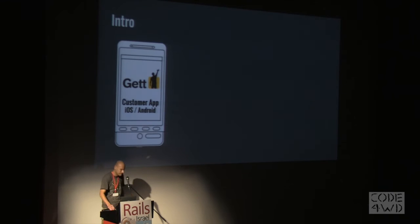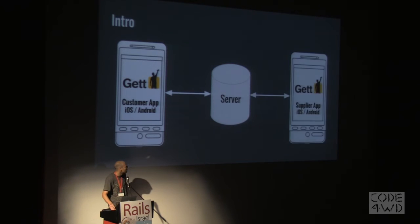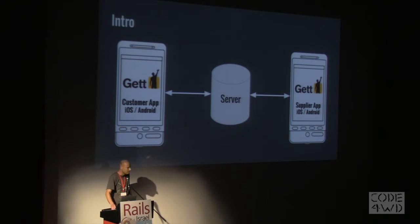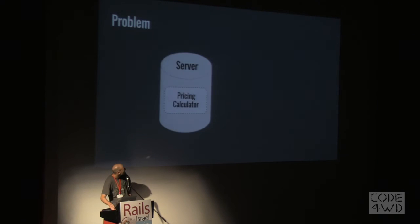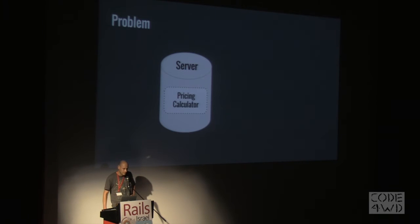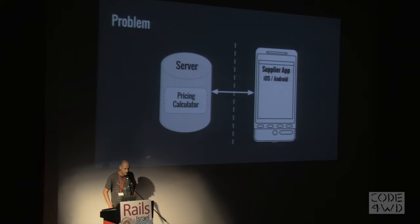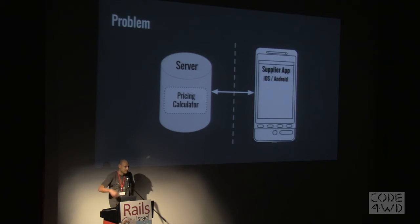Generally, the customer has an app installed, clicks to order something — let's say a taxi ride to keep things simple. This goes to the server, the server finds a supplier who accepts the order, the supplier delivers, and all is well. How do we determine the price? There's a pricing calculator library for that. The application normally pulls or gets pushed pricing data. However, sometimes the application has no network connection, and it still needs to know the price — especially for a cash taxi ride where the driver needs to charge the passenger.